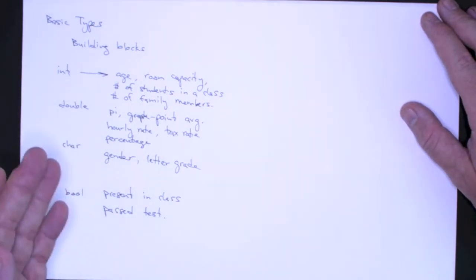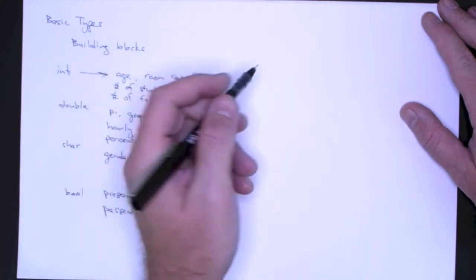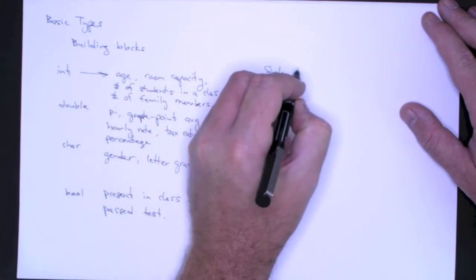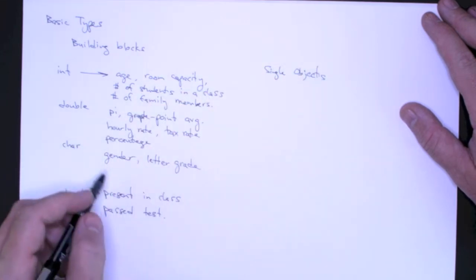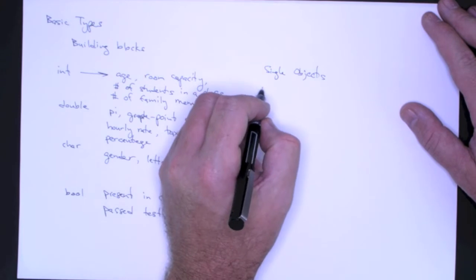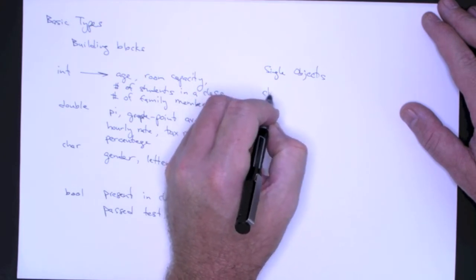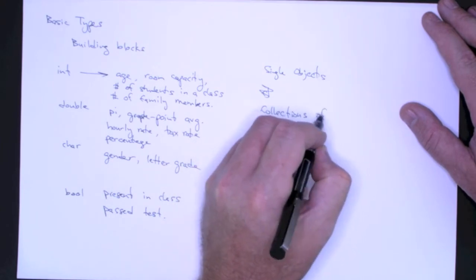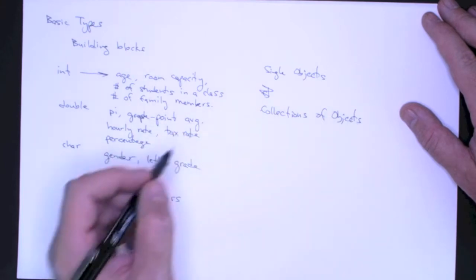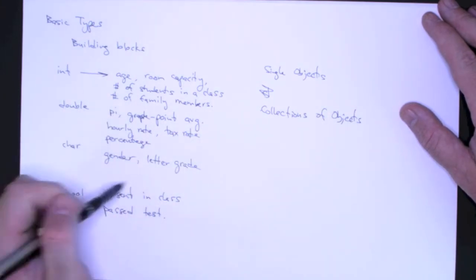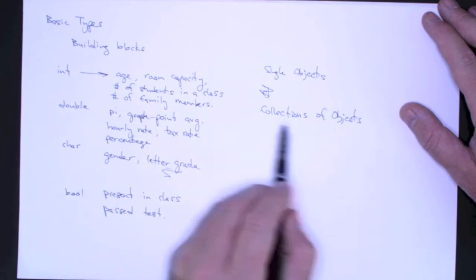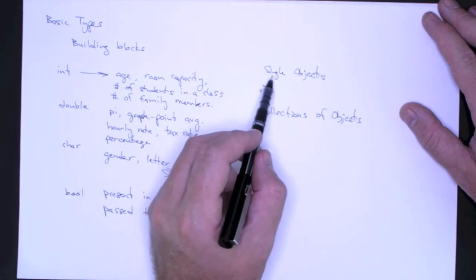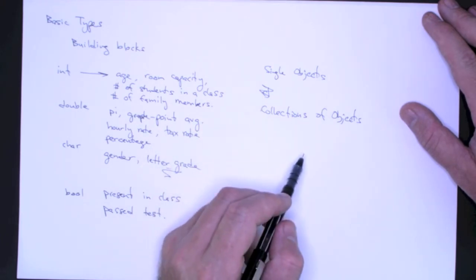And usually, what we want to do in object-oriented programming and programming in general is we want to represent information about single objects. But we also have a need for representing collections of objects. So I don't just have a grade or a letter grade. I actually have several letter grades if I'm teaching a class. So I've got single objects and I've got collections of objects.